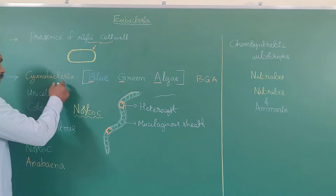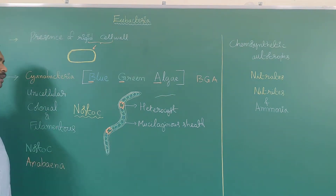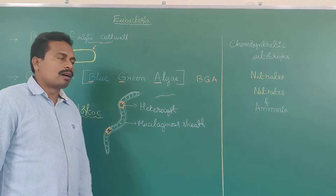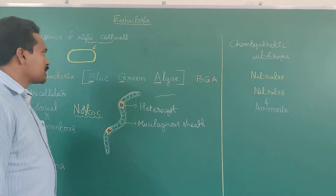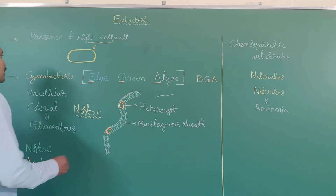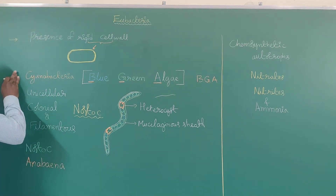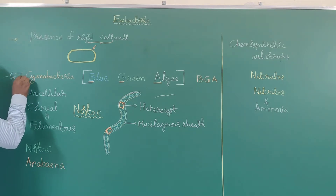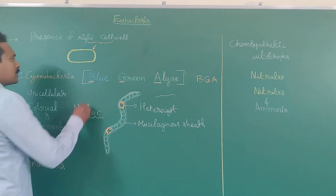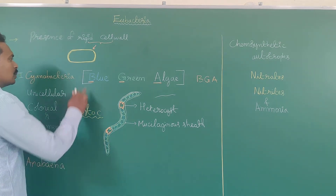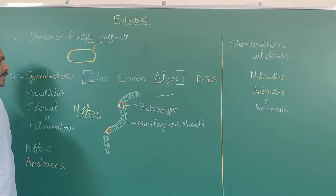This is important from an objective point of view for board exams or competitive examinations. From this concept they may ask assertion-reason type questions. Statement 1: Cyanobacteria are referred to as blue-green algae.